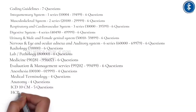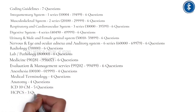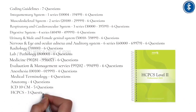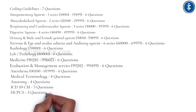The HCPCS section has 3 questions. It covers the Healthcare Common Procedure Coding System (HCPCS), which is divided into two principal subsystems: Level I and Level II of the HCPCS.